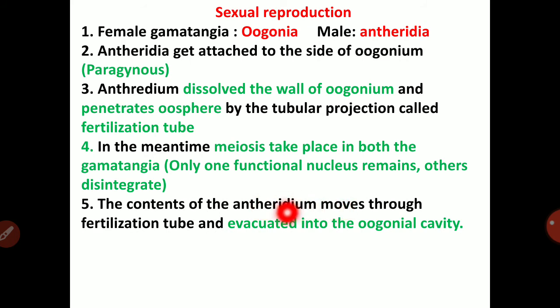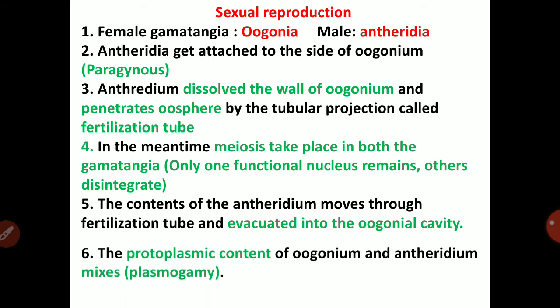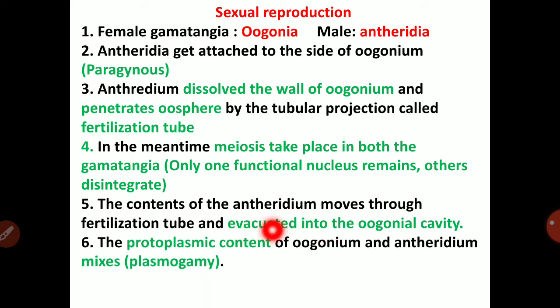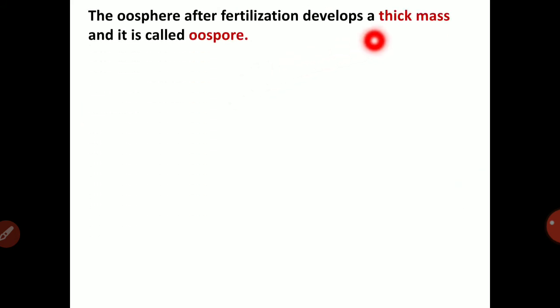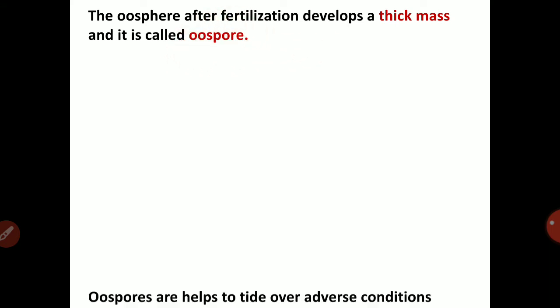The contents of the antheridium move through the fertilization tube and are evacuated into the oogonial cavity. The protoplasmic contents of oogonium and antheridium mix — that is plasmogamy. Then plasmogamy is soon followed by nuclear fusion: one functional antheridial nucleus and one functional female nucleus fuse to produce the zygote — that is karyogamy. After fertilization, the oospore develops a thick wall and is called the oospore.